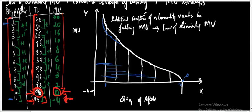The law of diminishing marginal utility states that the additional consumption of a commodity will result in falling marginal utility. This is essentially the essence of the law — marginal utility becomes zero and eventually turns out to be negative.